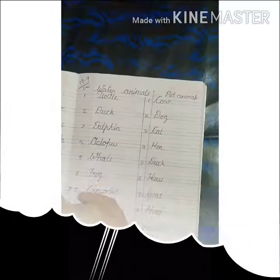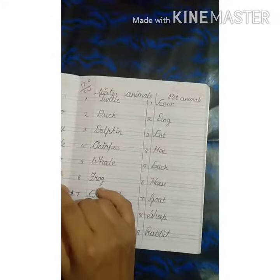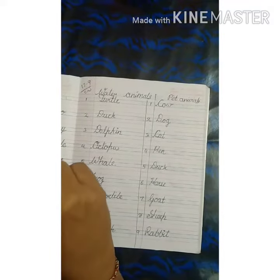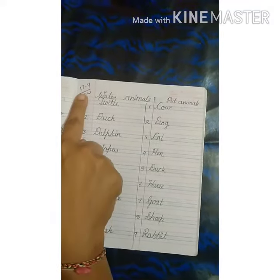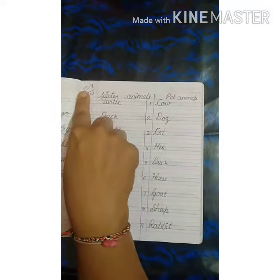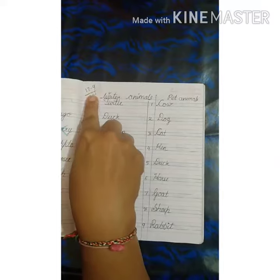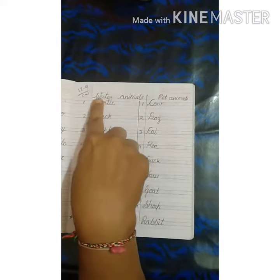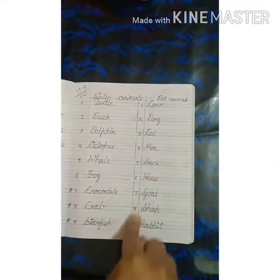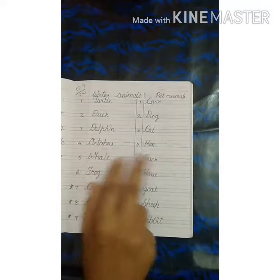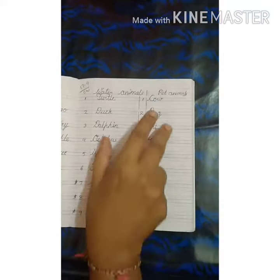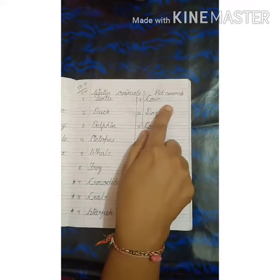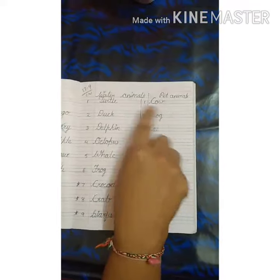Good morning dear students, Jai Swaminarayan. Today again we will do the revision. First you have to mention the date, that is 1709. Give a title, and you have to write down two spellings on one page — here water animals and here pet animals.